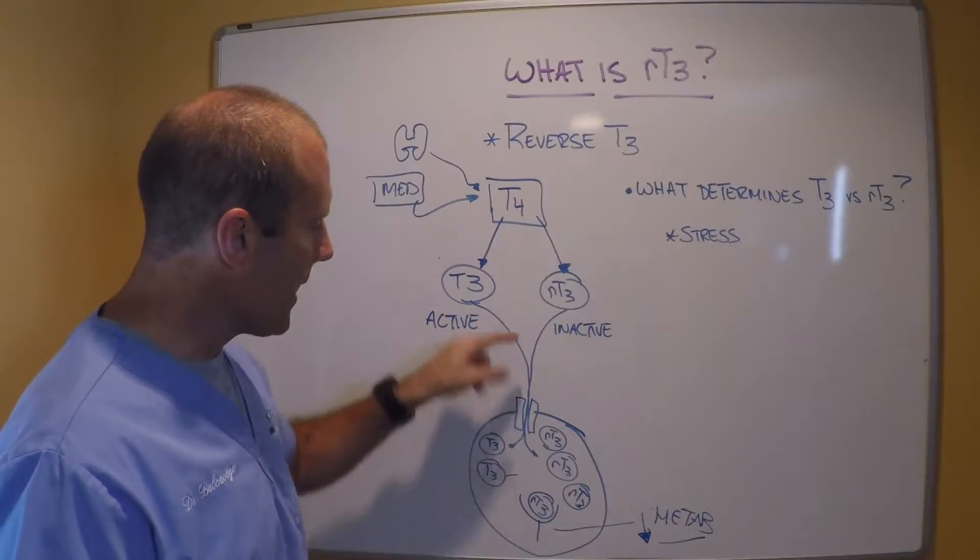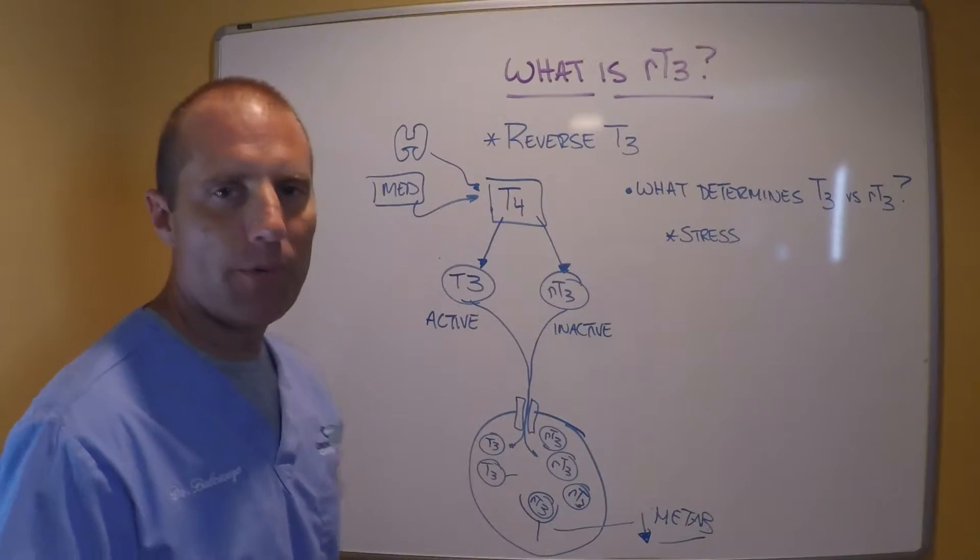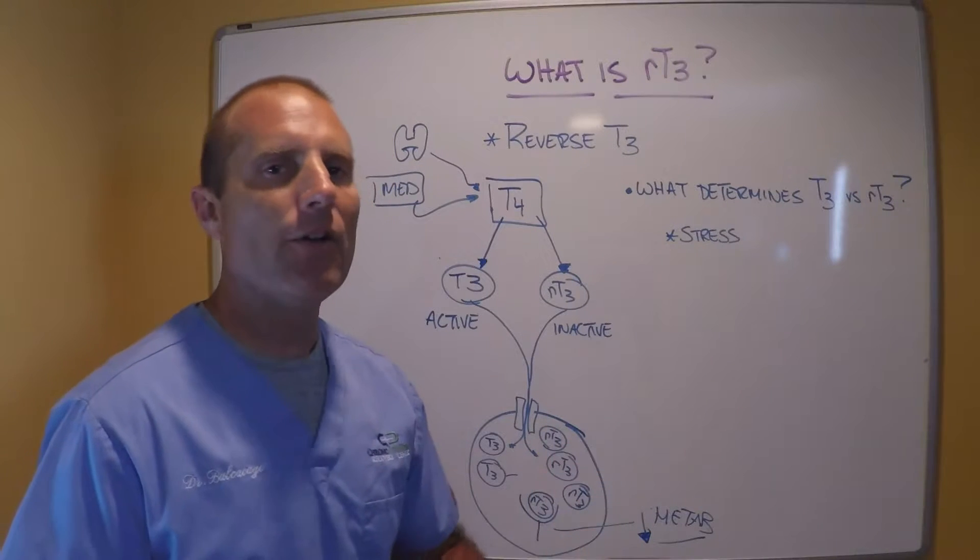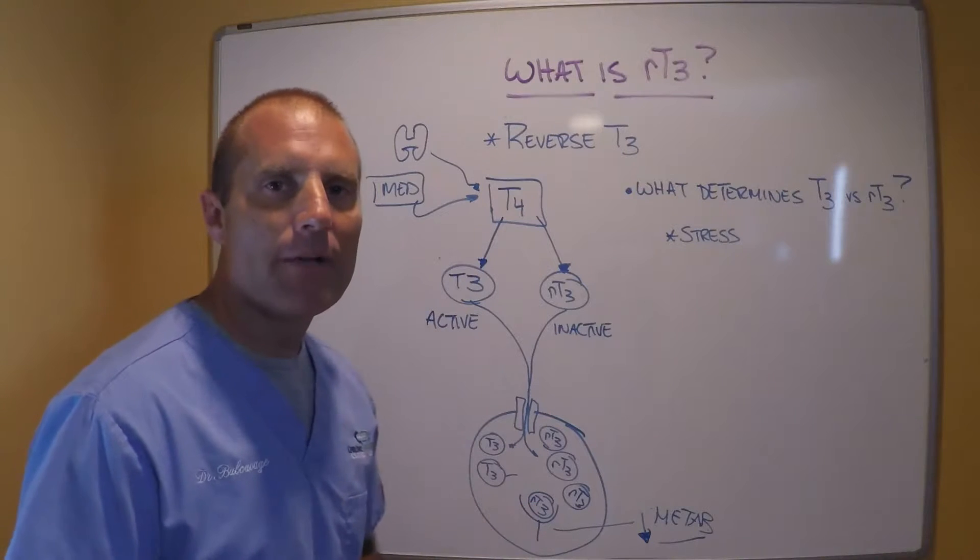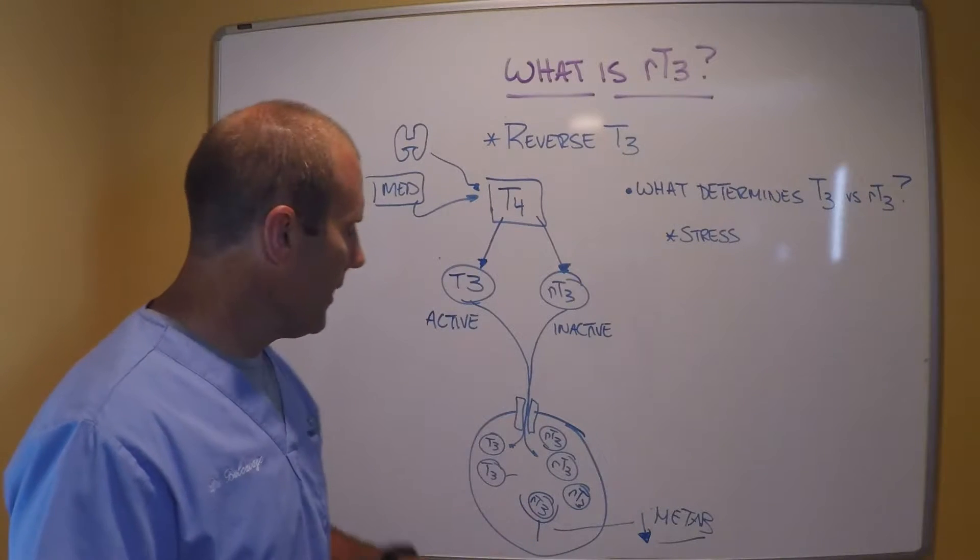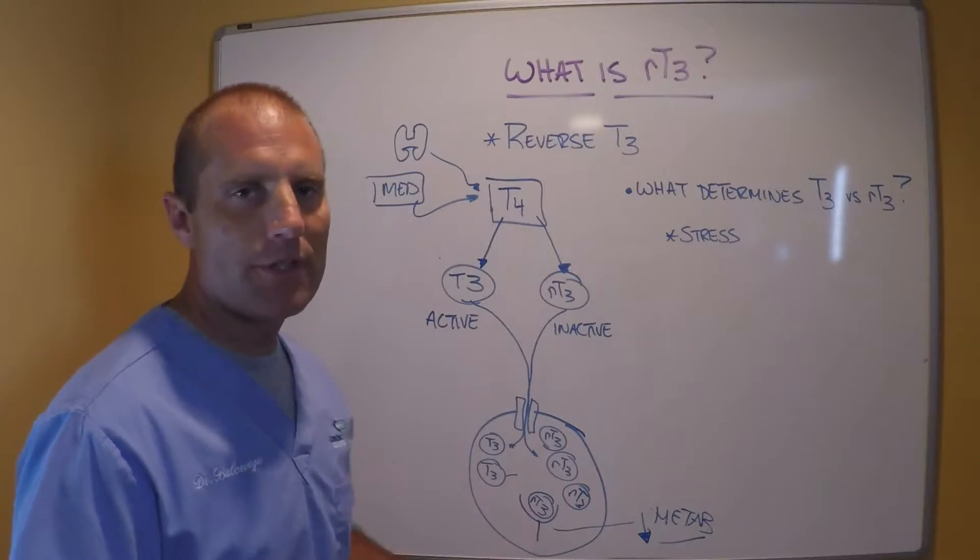But T4 can be converted into T3 or into inactive reverse T3. Both of these can be transported into the peripheral tissues, and depending on which is in greater concentration, that's the one that's probably going to bind to the thyroid receptor.